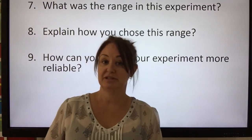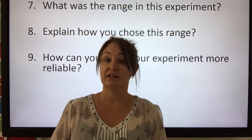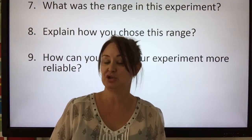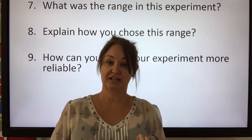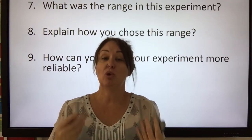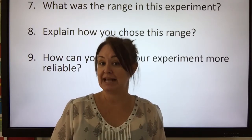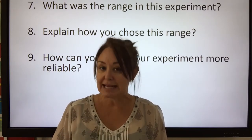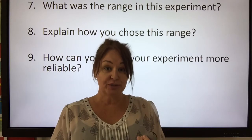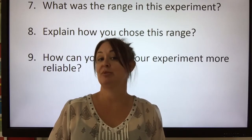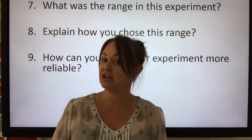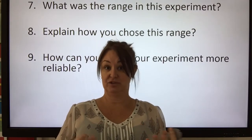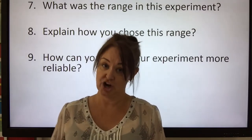How can you make your experiment more reliable? Reliability is ensured by repeating your experiment. With more than one result, you can take a mean — not just any average, specifically the mean. You can also notice anomalous results and choose to repeat those to see if they give the same value or are truly anomalous.